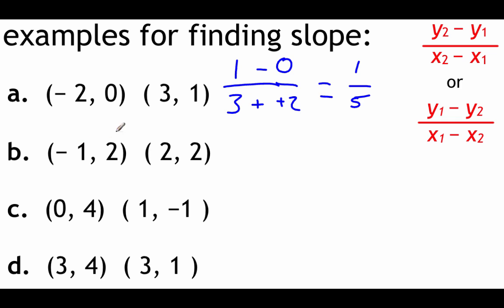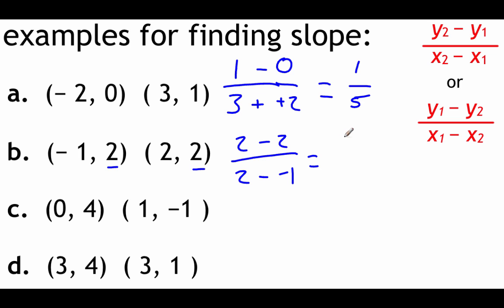For letter B, we've got negative 1, 2 and 2, 2. Our y value is the same, so 2 minus 2. Same thing on bottom — both of those were 2, so just pick one to start with on bottom. Let's go 2 minus negative 1. Across the top, 2 minus 2 is 0. Across the bottom, we've got another double negative, so that turns into addition: 2 plus 1 is 3. Now 0 divided by 3 is just 0 once we simplify that down.